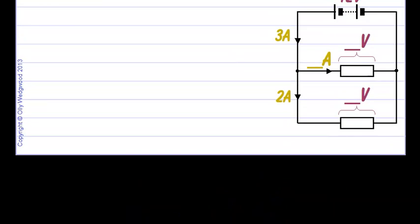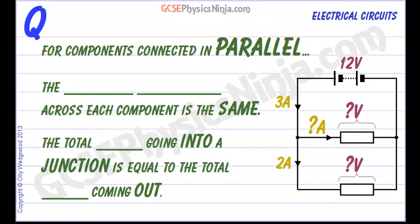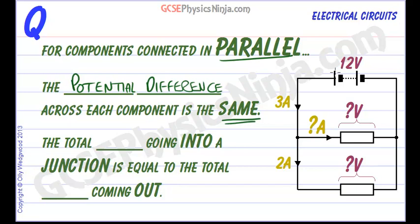Let's go back to this flashcard and see if we can make some sense of it. So for components connected in parallel, the potential difference or voltage of the supply across each component is the same.